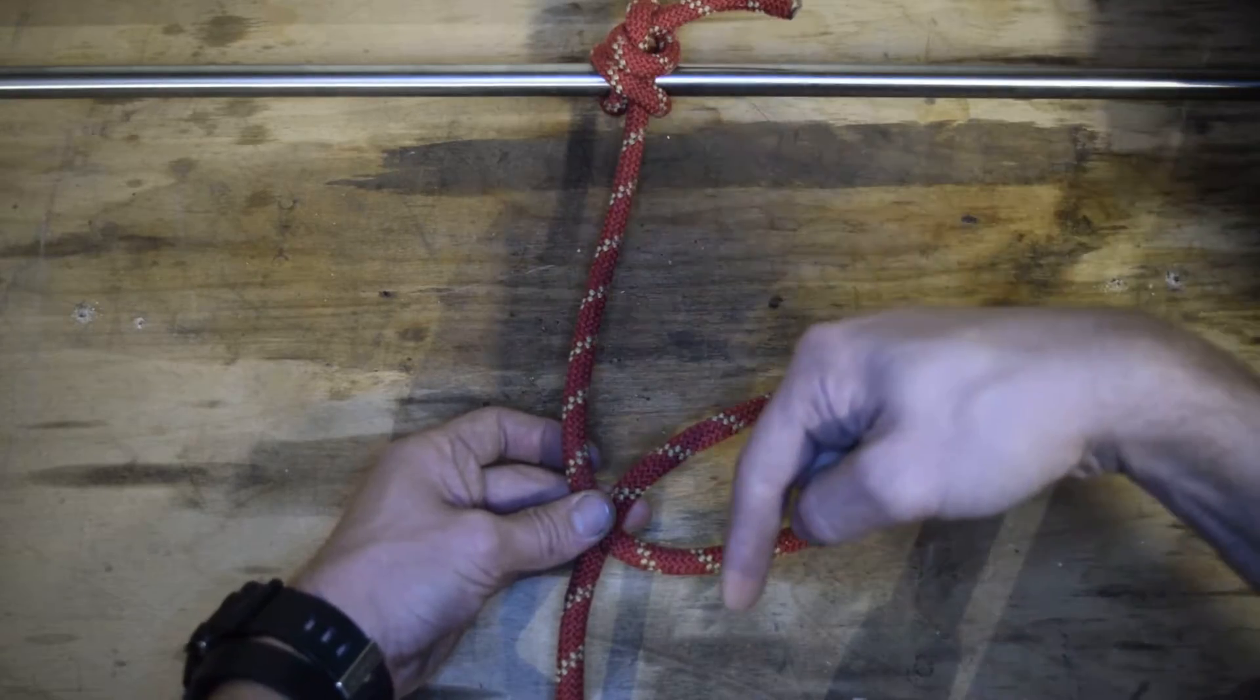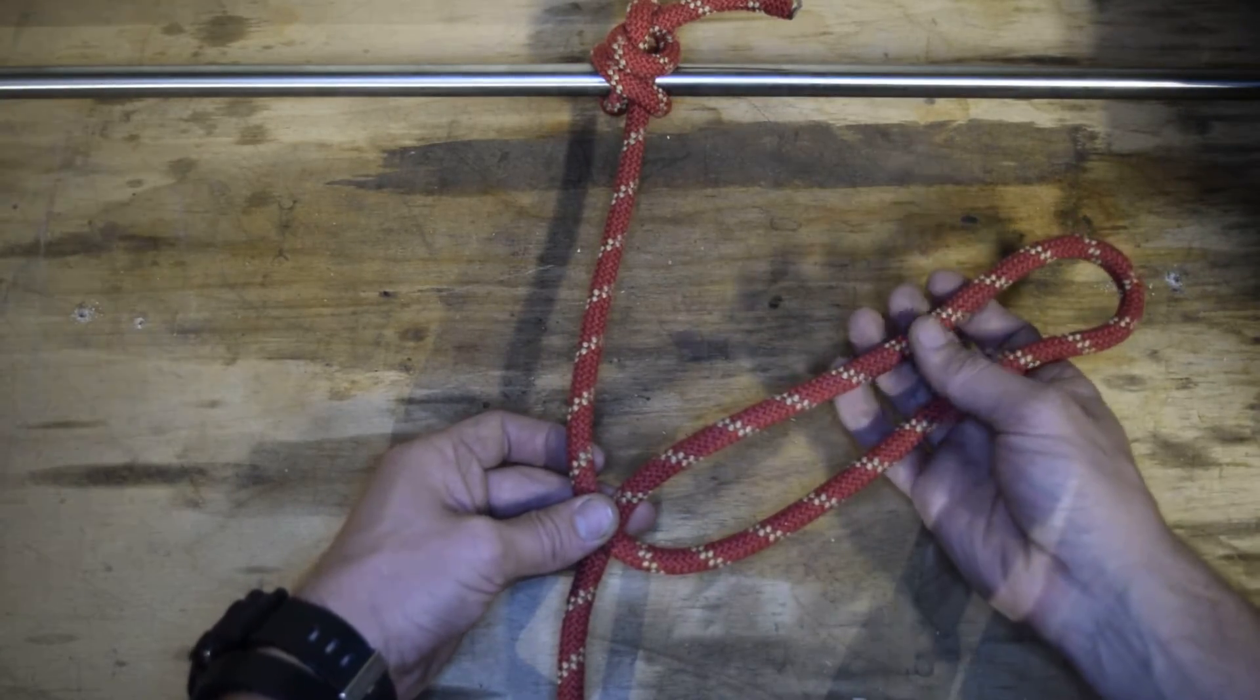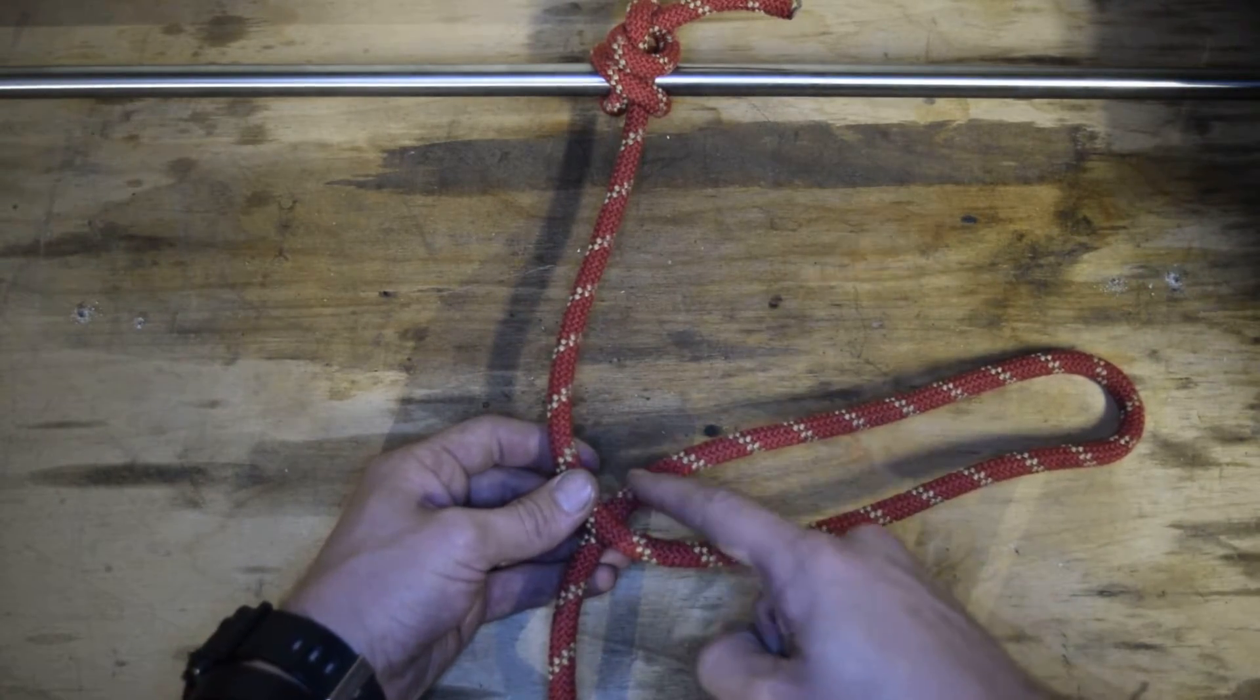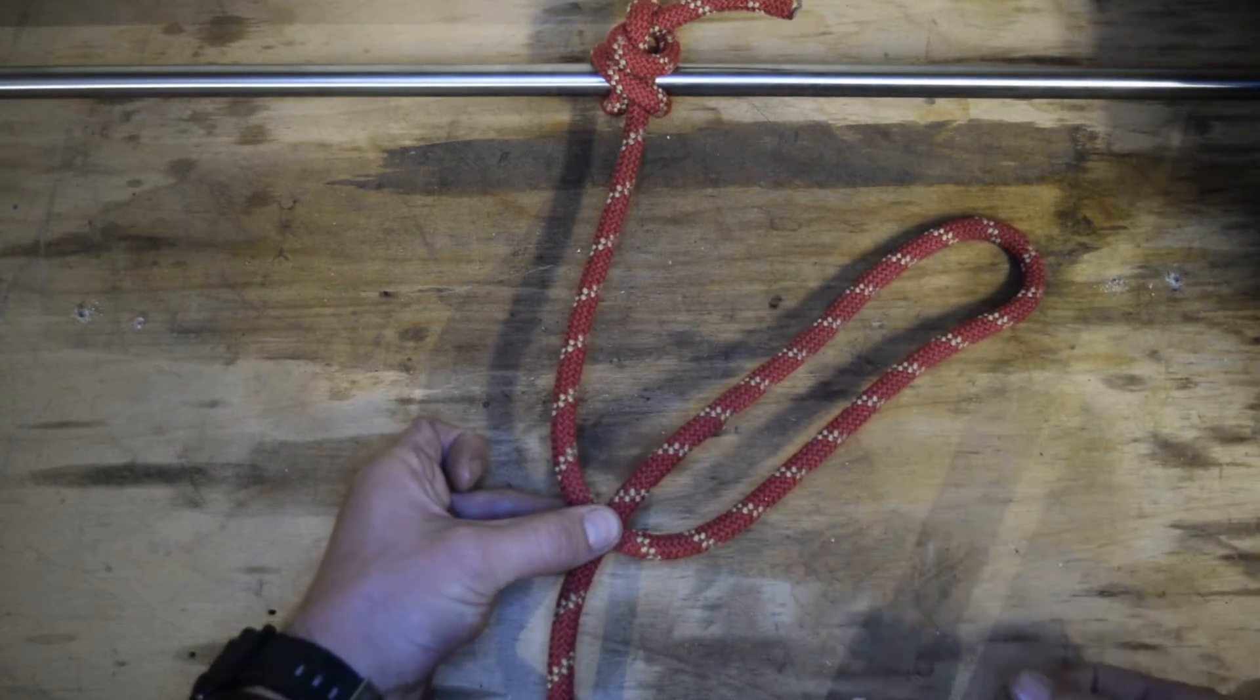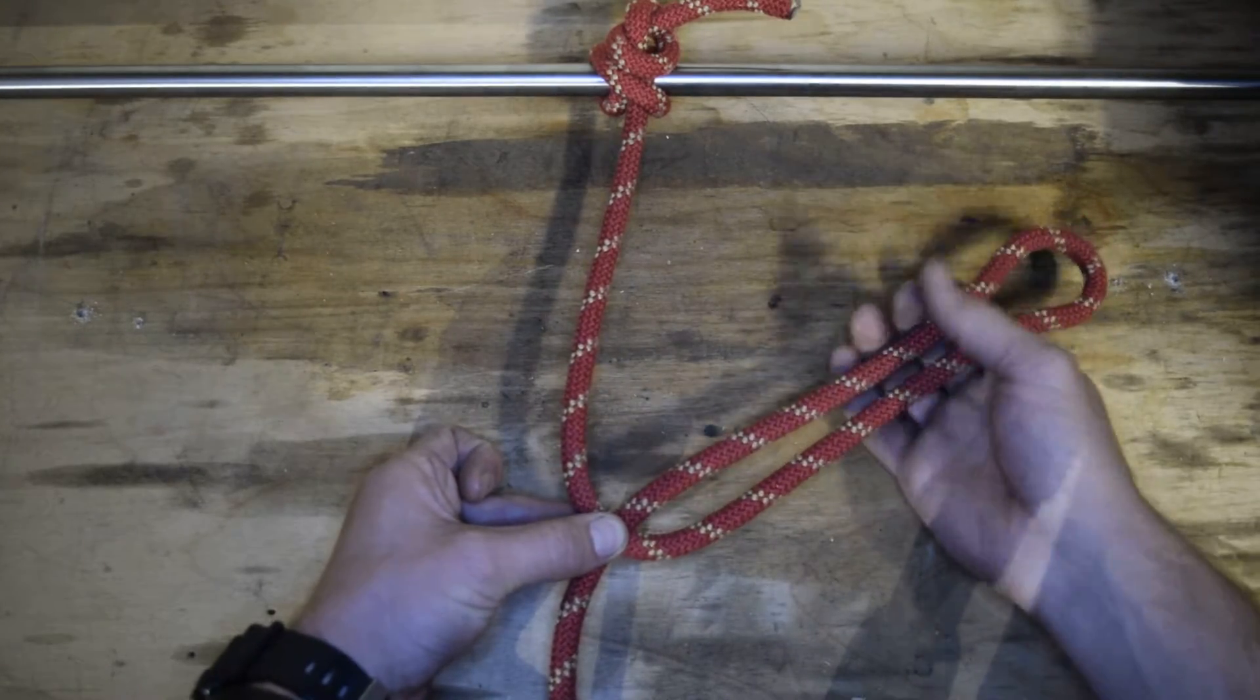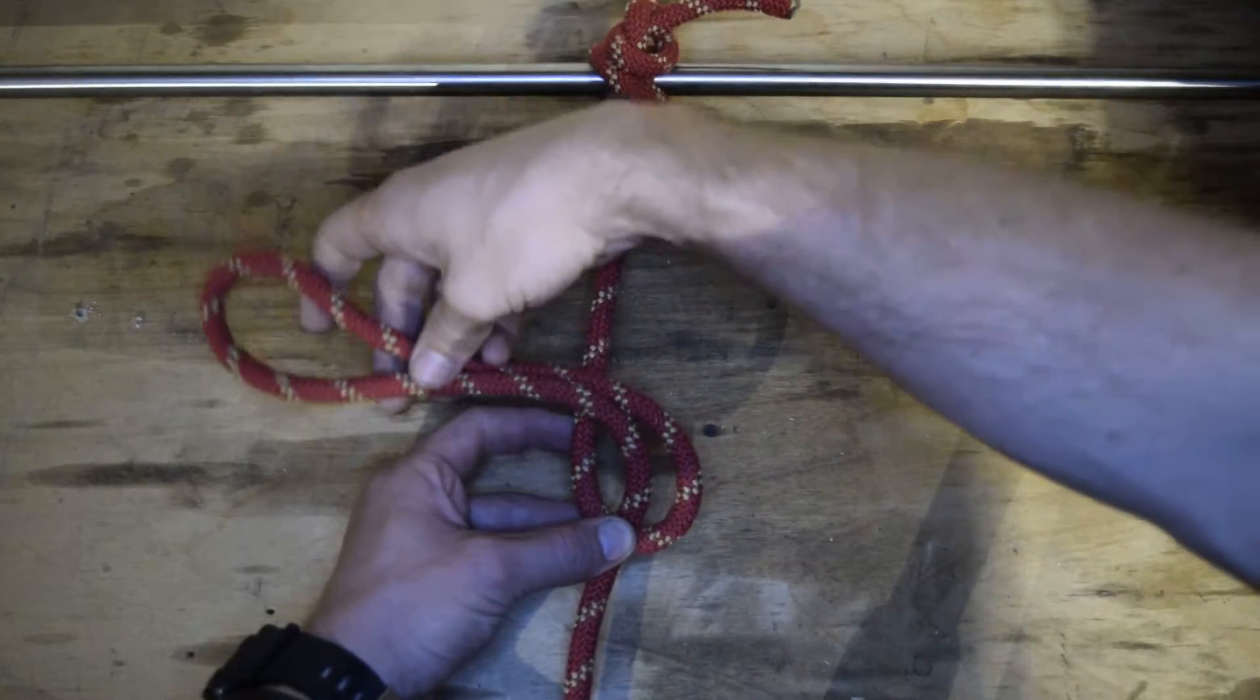We're going to face the figure 8 down. So we're going to start with this, and because my rope's on the bottom, I want to make sure that this is going to stay here. So I'm just going to pinch this cross right here, make a bite, and I'm going to go over the top.